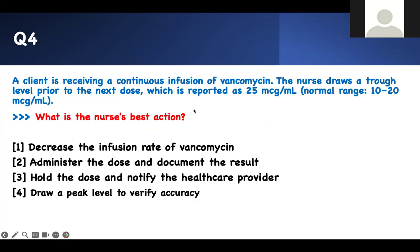What is the next best action? A client is receiving a continuous infusion of vancomycin. The nurse draws a trough level prior to the next dose to see the baseline, which is reported at 25 mcg/mL. Normal range is 10 to 20. Your trough is higher than the normal range — you're not going to give the medication or just decrease the infusion rate; you have to wait until the trough is normal. You hold the dose and notify the doctor. You don't draw a peak level to verify — you draw a peak after infusion of the medication.